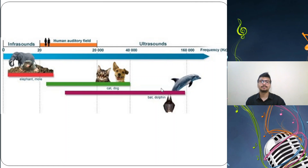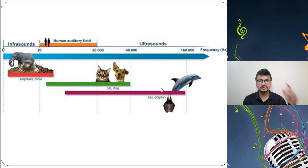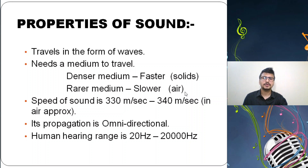Above 40,000 hertz is the ultrasonic range. Examples are bats and dolphins — their frequency range is 40,000 to 160,000 hertz. These are very high-frequency animals with a very high oral sensation; they listen to things more loudly or more quickly than human beings.